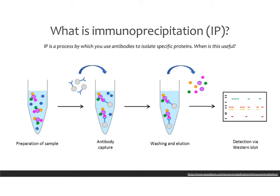Now that we understand chromatin and antibodies, the next concept is immunoprecipitation. Antibodies go directly into this process. Immunoprecipitation, or IP, is a process where you use specific antibodies raised against your protein of interest in order to isolate proteins. This is useful when you have a protein and want to know how much of it is in a soup of proteins, or you want to isolate it, or maybe find out what else that protein binds to — when you pull this protein out of the soup, anything it's bound to will come with it.